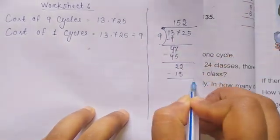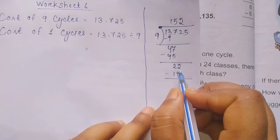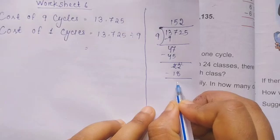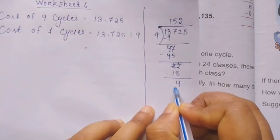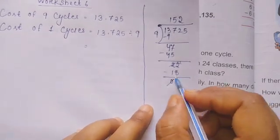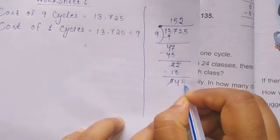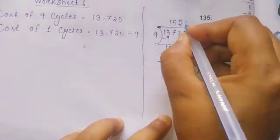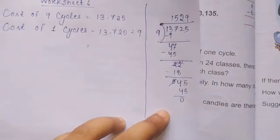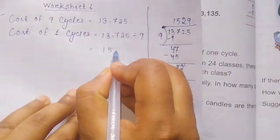2 minus 8 we cannot subtract, so we borrow: 12 minus 8 equals 4, then 1 minus 1 equals 0. 4 is less than 9, so we bring down 5, making 45. 9 times 5 is 45. The answer is 1,529.